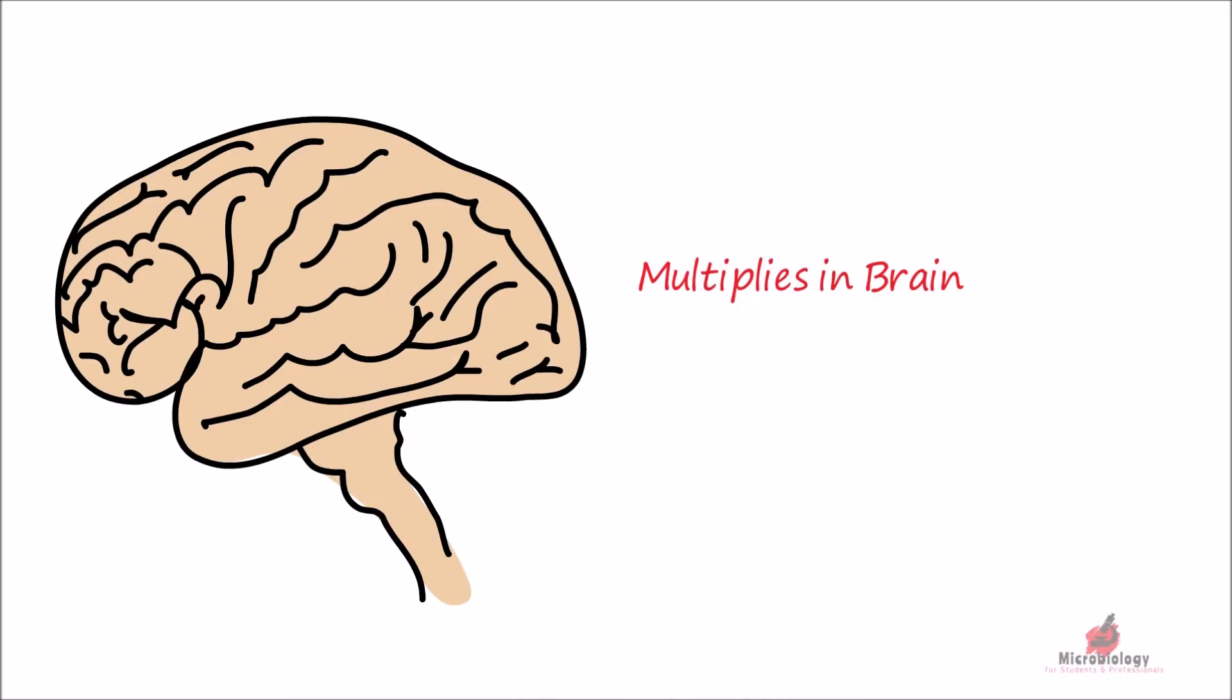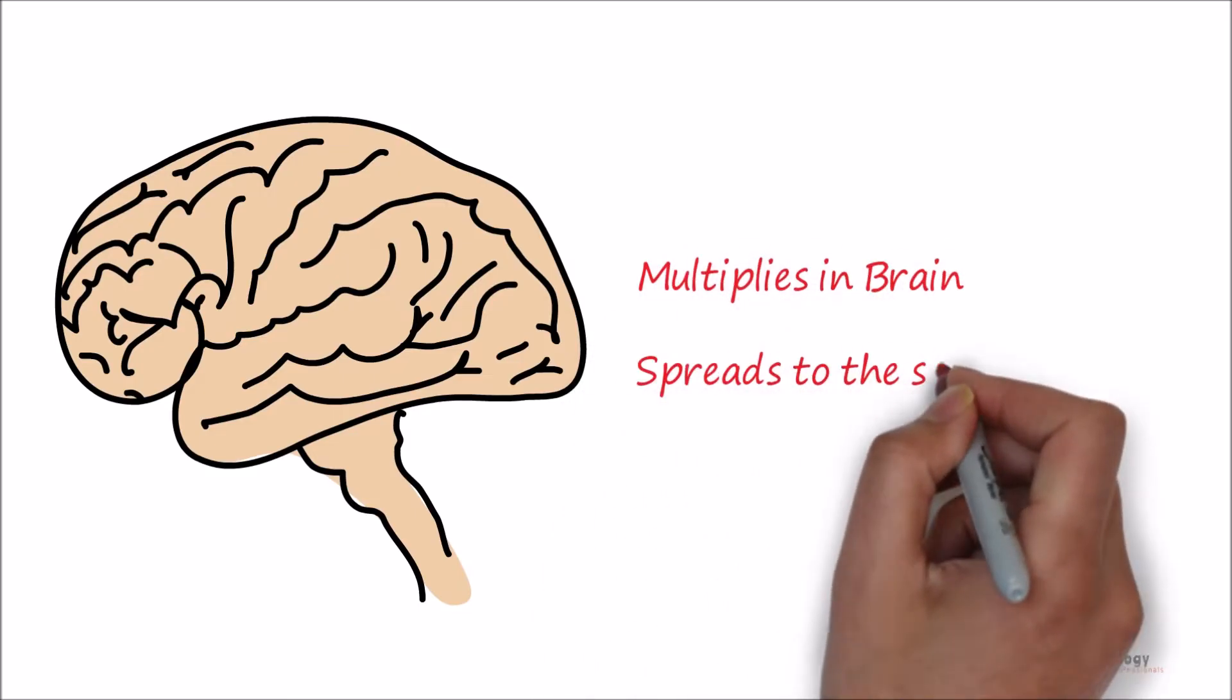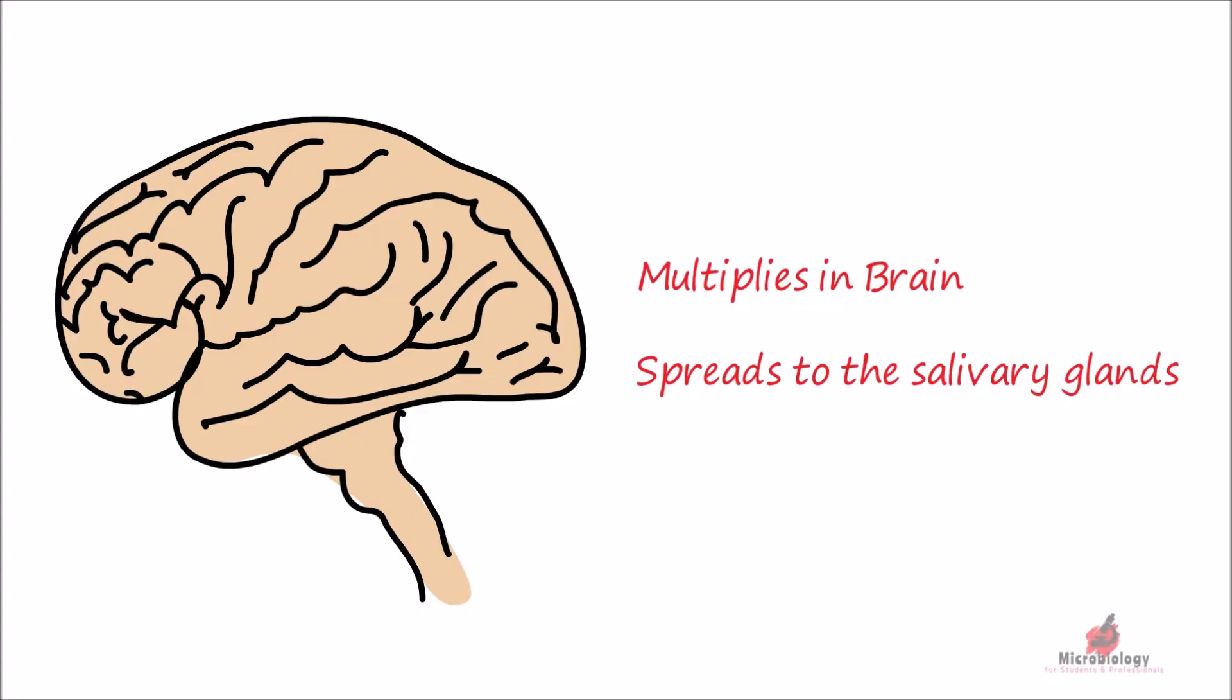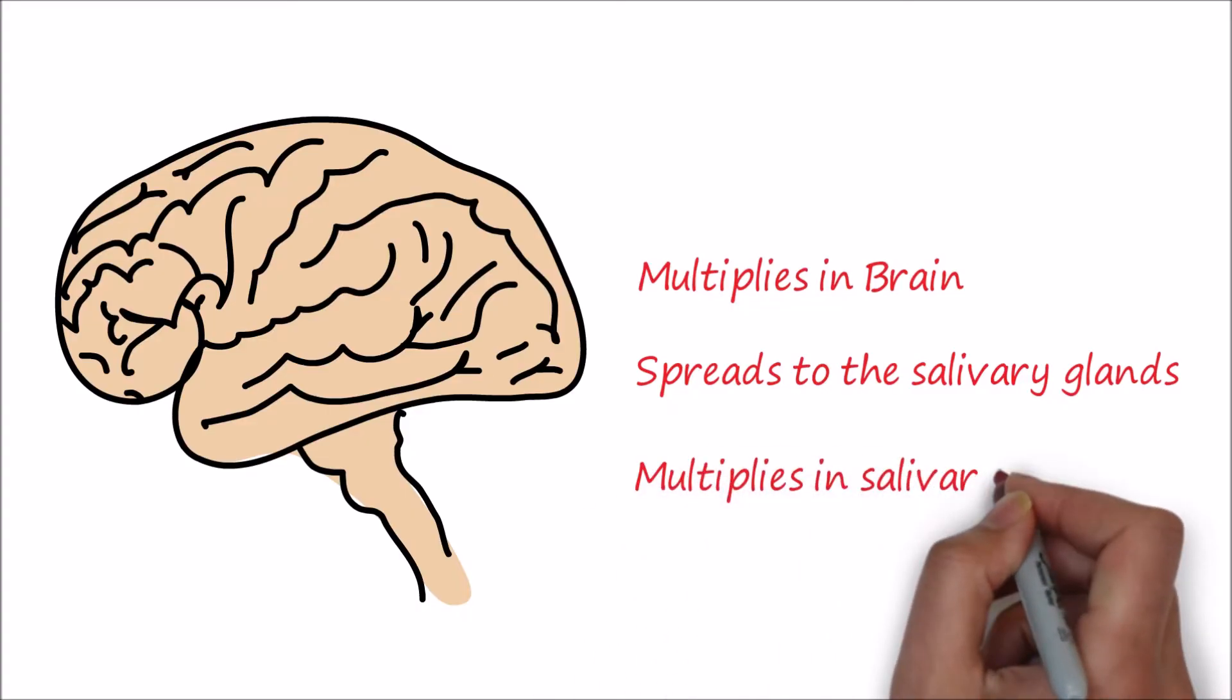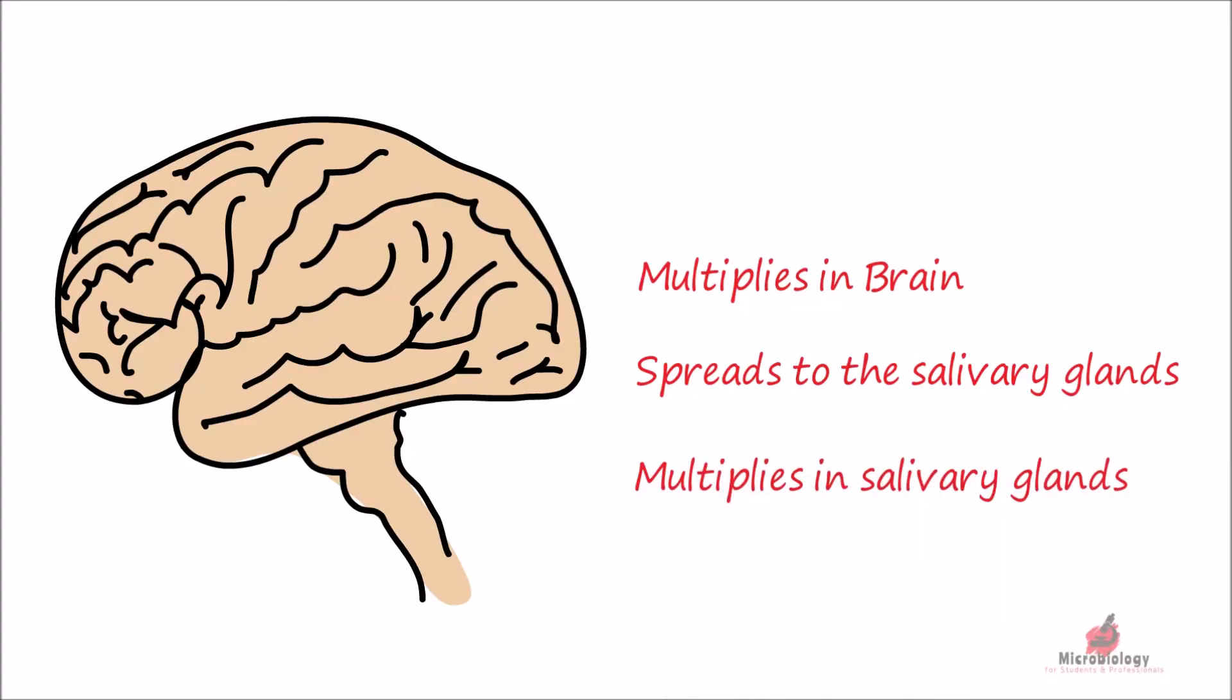Then the virus spreads to the other parts of the body and also to the salivary glands. The virus multiplies in the salivary glands and gets ready for transmission.